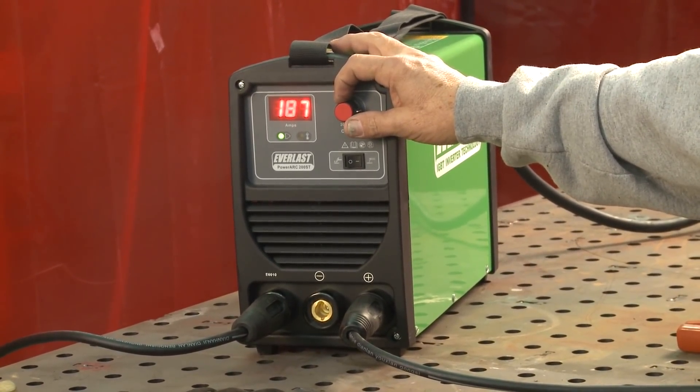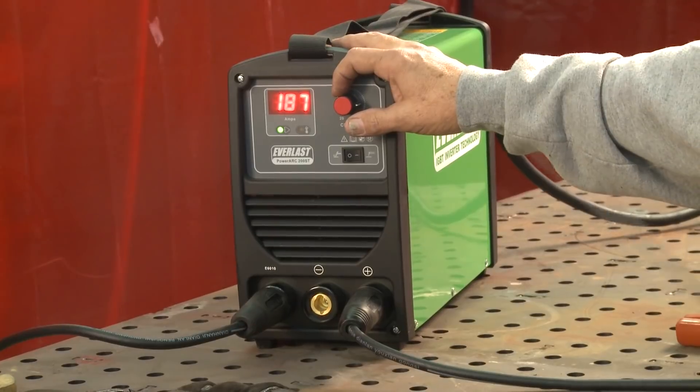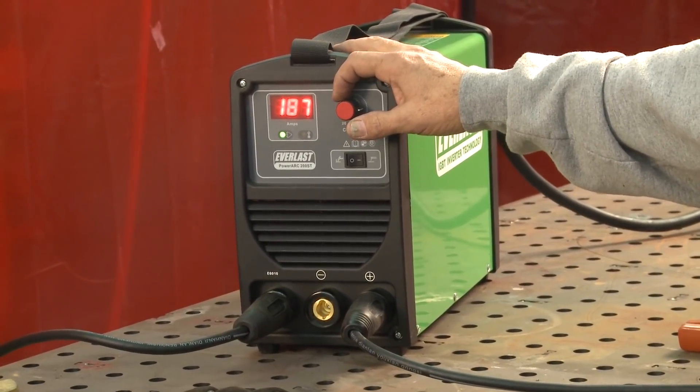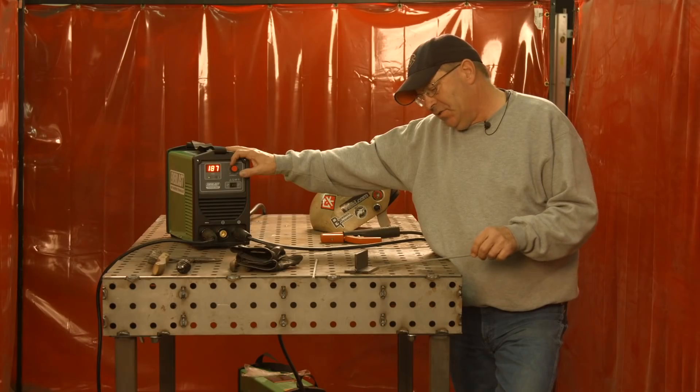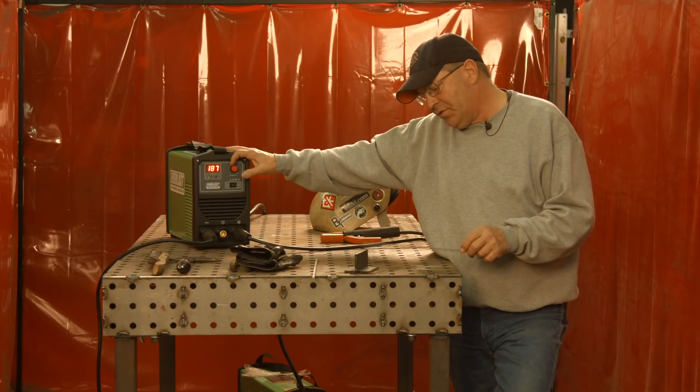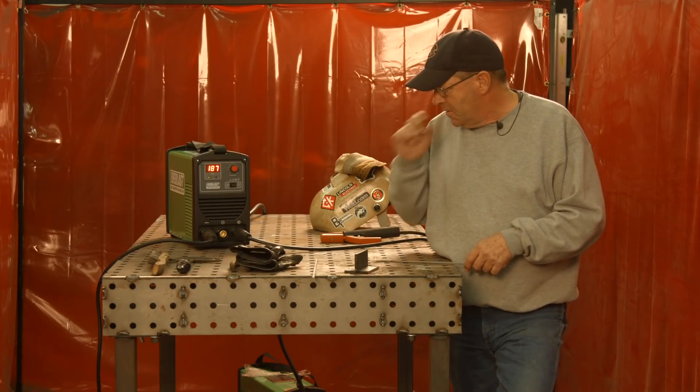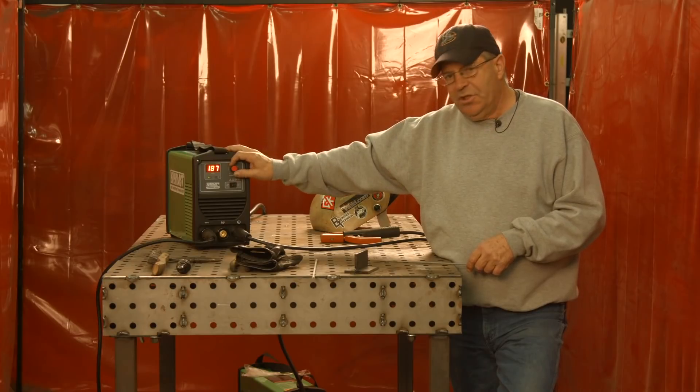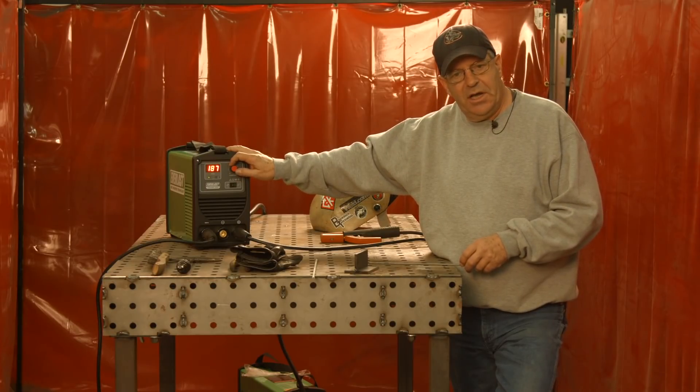I'm going to run a couple of rods here. I'm going to run an 1/8 inch 6010, and I'm going to run an 1/8 inch 7018, and just do a simple fillet weld on some 1/4 inch stock. And the reason I want to show that is a pretty powerful little machine at $399 list, is that right? $399.